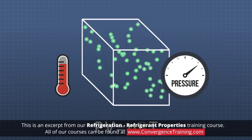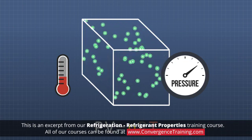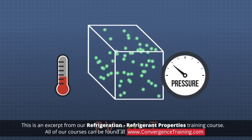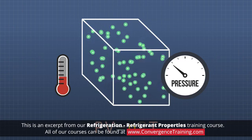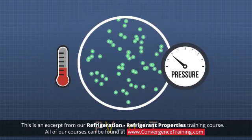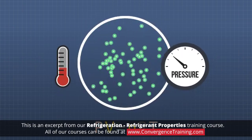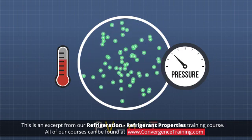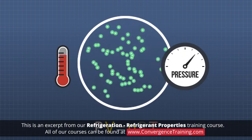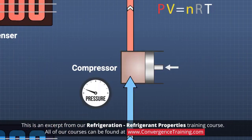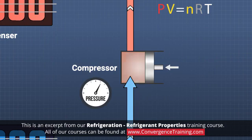Likewise, a decrease in gas temperature will cause its pressure and or volume to decrease. So, if a gas is contained in a vessel with a fixed volume, a change in temperature will cause a corresponding change in pressure. This is why the increase in pressure accomplished by the compressor is accompanied by an increase in temperature.